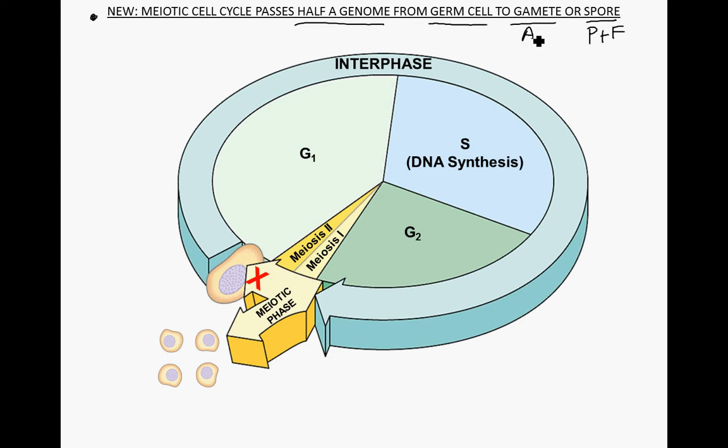We've seen this cell cycle diagram before: there's interphase with G1, then DNA is synthesized in S phase, and then there's G2 phase — the same applies in the meiotic cell cycle. In a germ cell, the cell is signaled to undergo meiosis rather than mitosis, even though many germ cells are produced mitotically. The first thing that happens is synthesis of DNA, where individual chromosomes are replicated into the sister chromatid form.